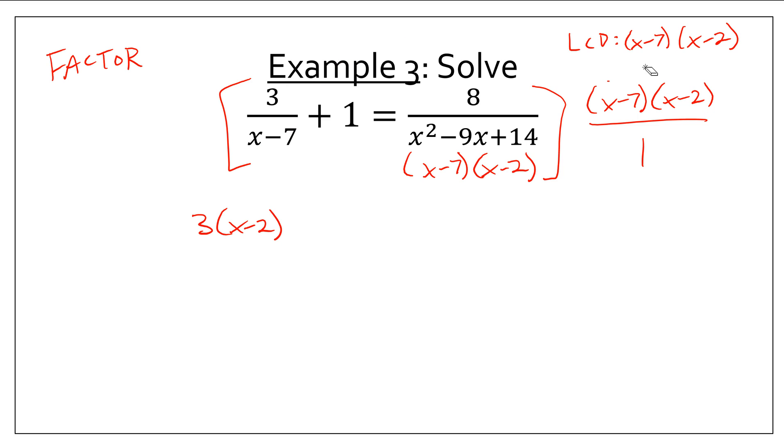Next, what happens when I multiply this times 1? Well, nothing cancels, right? So, I'm left with x minus 7 times x minus 2. That's going to be a FOIL problem. That'll be difficult later on.